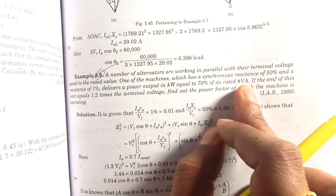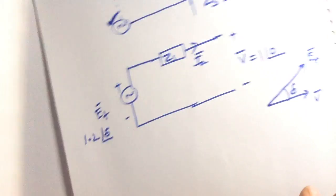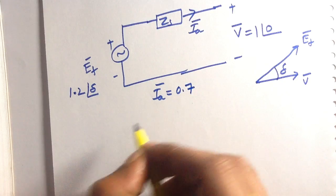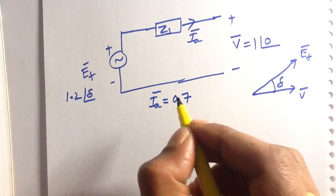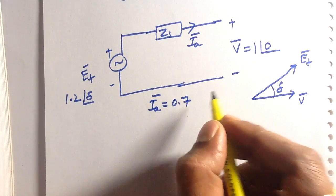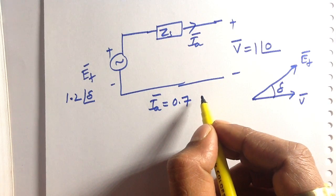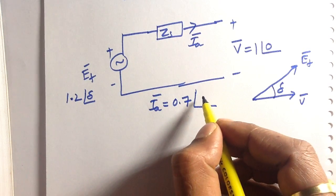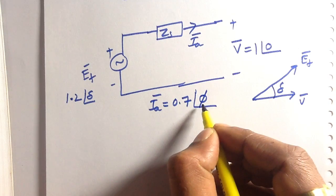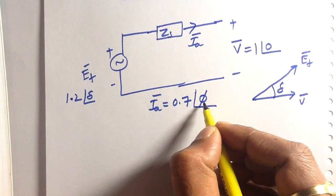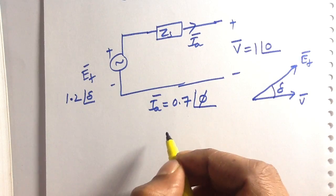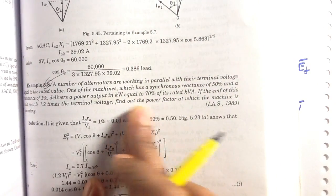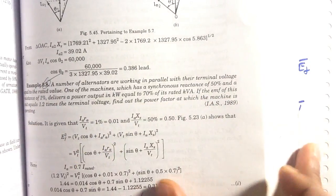The alternator delivers a power output in kilowatts equal to 70% of its rated kVA, which means the magnitude of the current is 0.7 per unit. We don't know whether the alternator is working at leading or lagging power factor, so let us assume it is working at leading power factor, giving I_A = 0.7∠+φ.